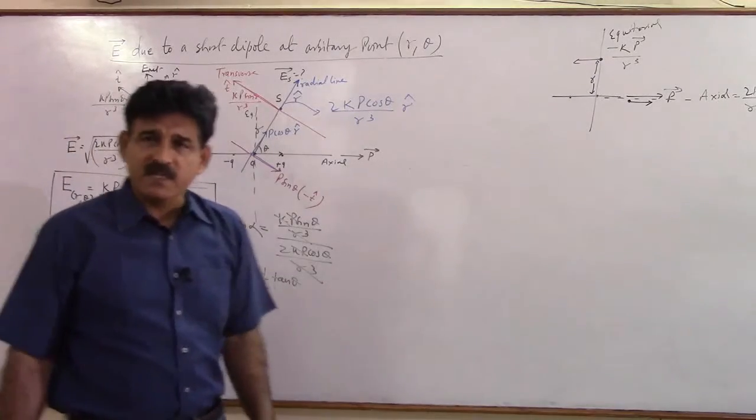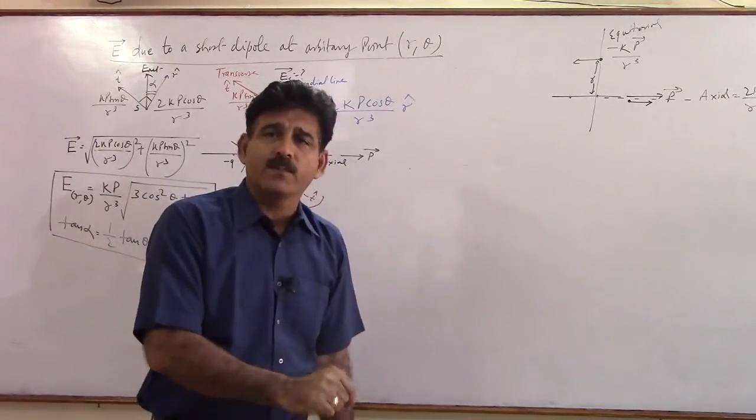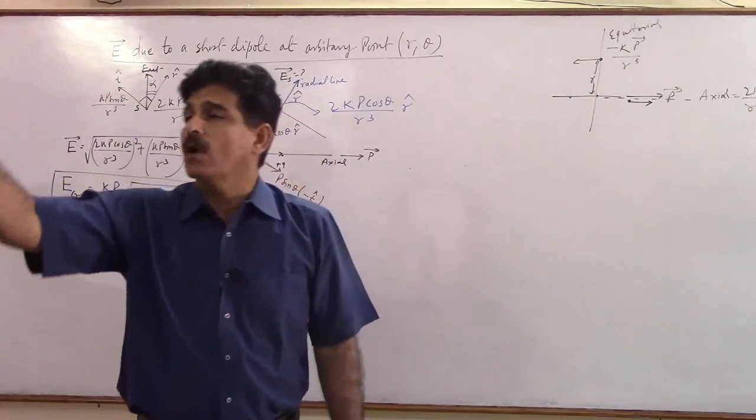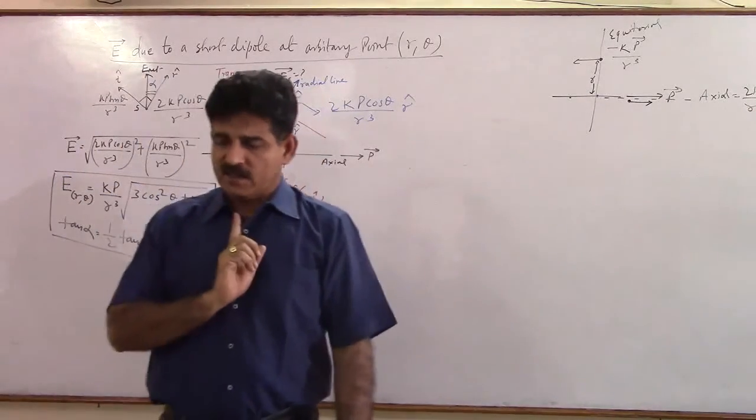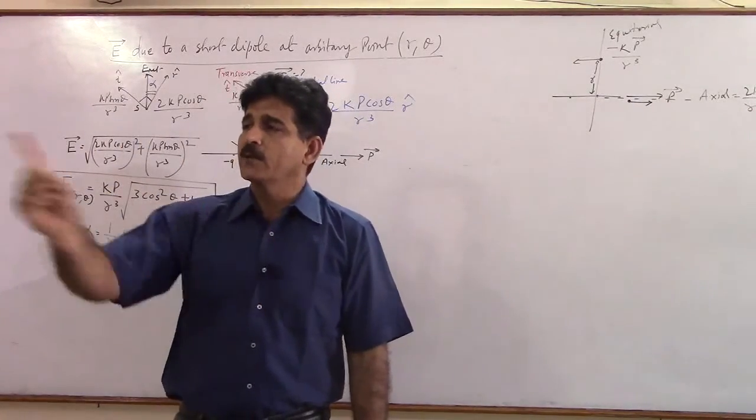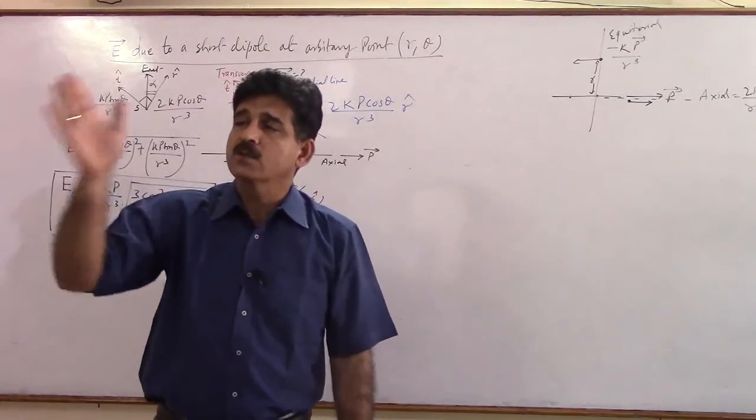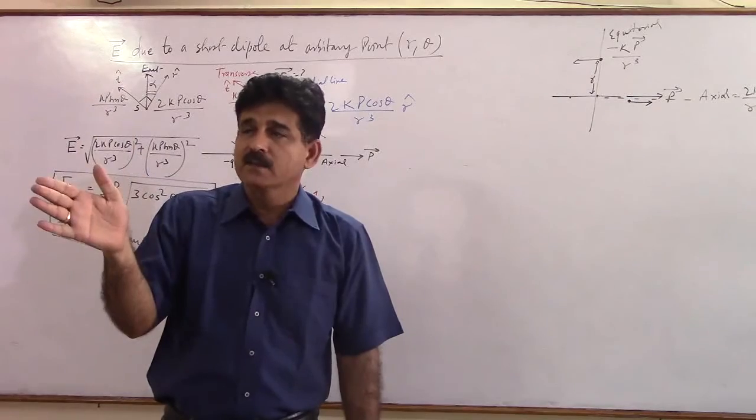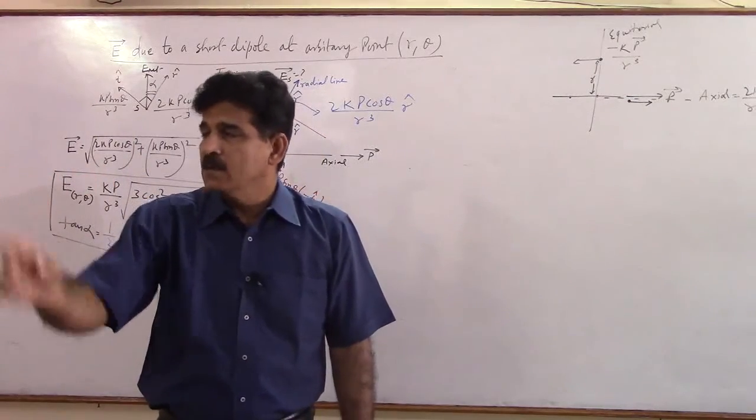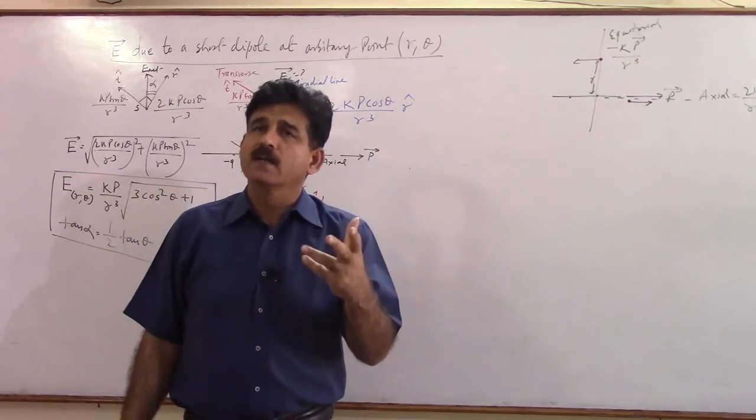Radial line is basically the line joining the center of the dipole to the point of observation. If I am the center of the dipole and you are the point, then this line will be called radial. And the alpha you measure will be measured from this line.